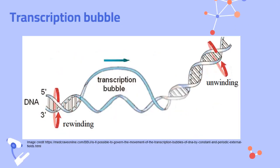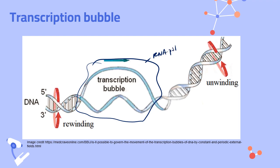A super cool thing about RNA polymerase: it does not need any help to open up the DNA double helix. RNA polymerase all by itself can unwind the DNA, forming what we call the transcription bubble. We open up the DNA for only a very short amount of time — just long enough to use that template strand to make some messenger RNA. Then we rewind that DNA as the polymerase slides along the gene.